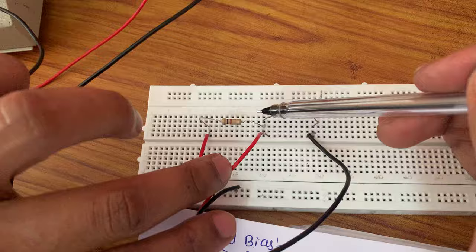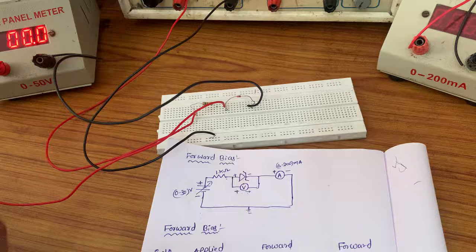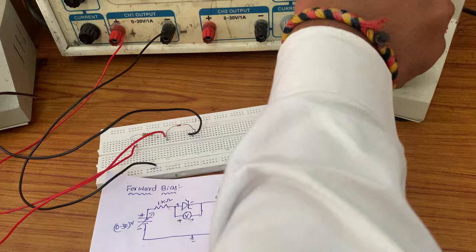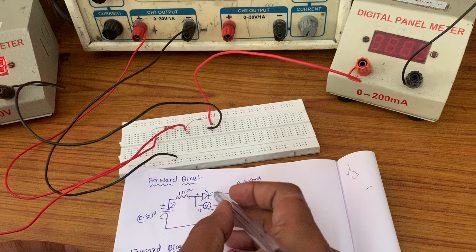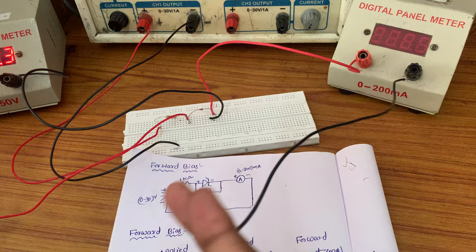Next, we will connect the ammeter. The ammeter positive is connected to the Zener diode cathode. Since they are connected, we connect vertically. The ammeter positive is connected to the cathode of the Zener diode. Then the ammeter negative is connected to the ground.